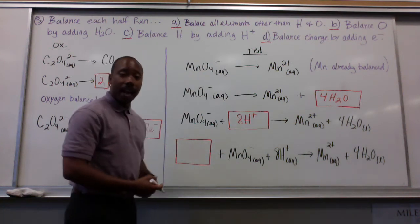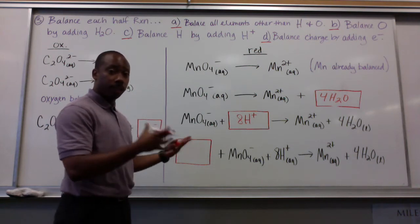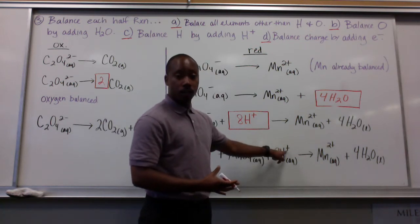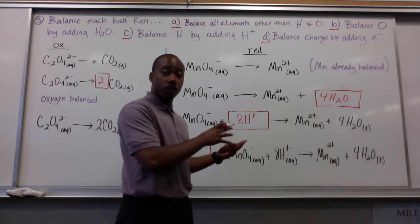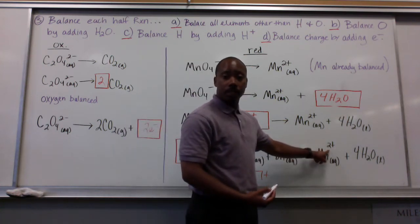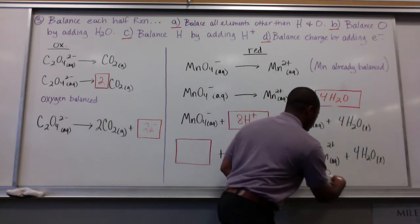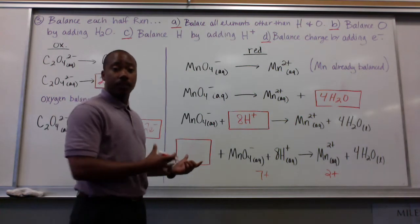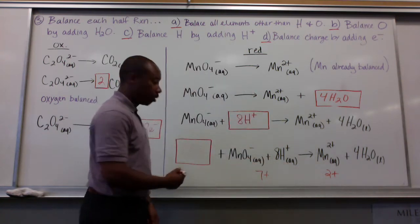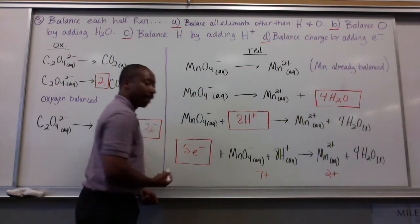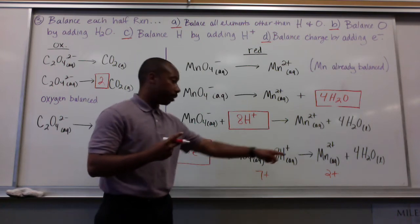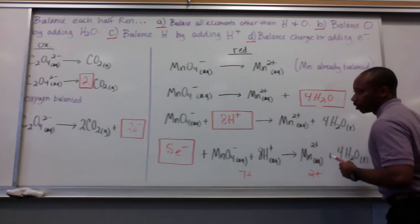And finally, balance the charge by adding electrons. You have to count up total charge on each side to get this right. Here I have negative 1 plus 8 positive charges. 8 positive charges plus a negative 1 gives you 7 positive charges. So that's 7+. On this side, I have 2+, and then H2O is electrically neutral, so on this side I have 2+. Remember, I can only add negative electrons. So in order to get the 2+ and the 7+ to be equal, I have to add 5 electrons. Because 5 negative things plus 7 positive things gives me positive 2, and it matches that side there.